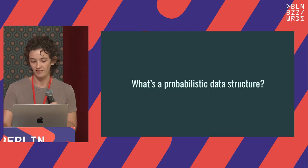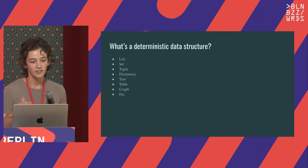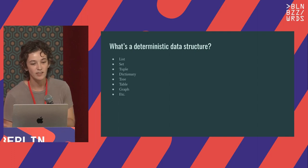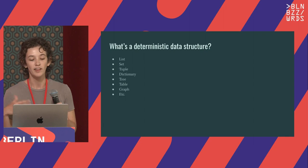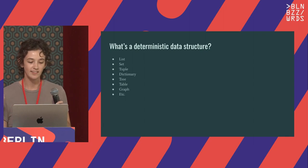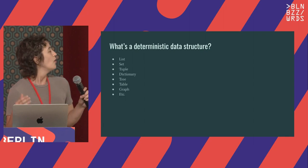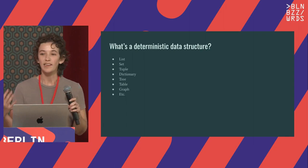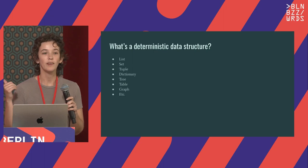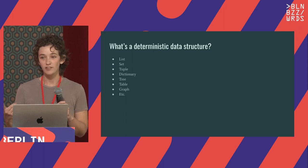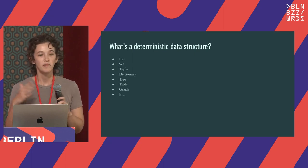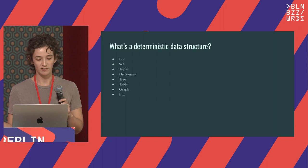So what's a probabilistic data structure? To cover first — a deterministic data structure is probably the ones you're very familiar with: lists, sets, tuples. All of these things, when you put something in, you know exactly what's in it, you know exactly how to get stuff out of it, and none of that's changing.